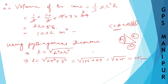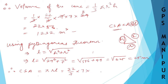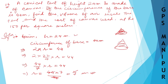Therefore, curved surface area of the cone = π × r × l = (22/7) × 7 × 25. The 7s cancel, and 22 × 25 = 550. So the curved surface area is 550 square meters.